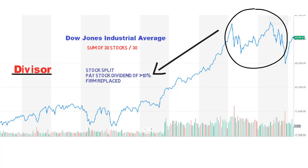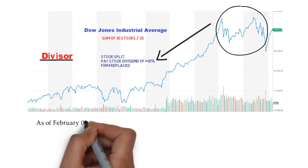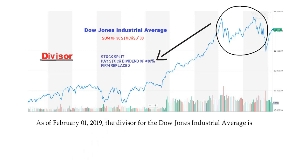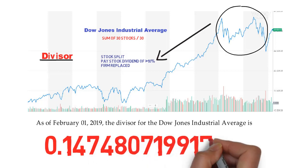As of February 1, 2019, the divisor for the Dow Jones Industrial Average is 0.14748071991788. We will now construct an index like Dow with a numerical example.